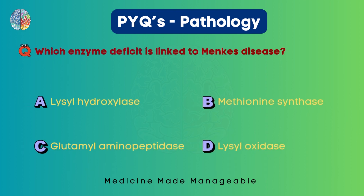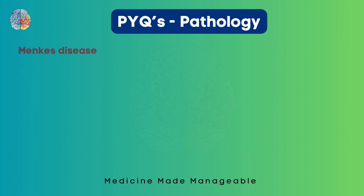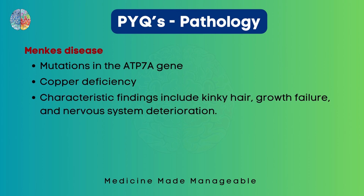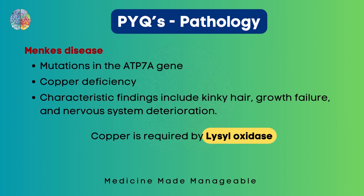Which enzyme deficiency is linked to Menkes disease? Is it Lysyl hydroxylase, Methionine synthase, Glutamyl aminopeptidase, or Lysyl oxidase? In Menkes disease, there are mutations in the ATP7A gene and copper deficiency is seen. The characteristic findings are kinky hair, growth failure, and nervous system deterioration — kinky hair is a very important key point. Copper is required by Lysyl oxidase, which is the answer.